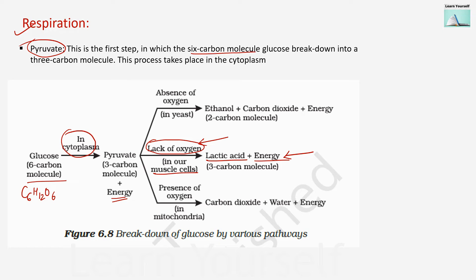The third type of process happens in the presence of enough oxygen, and it occurs in the mitochondria, where it gives carbon dioxide, water, and energy. This is a complete combustion of the glucose molecule, and much more energy is generated compared to the process that produces lactic acid.